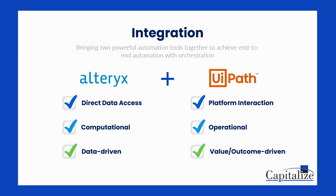Using UiPath and Alteryx together is kind of like having a skilled team of linemen and engineers working together to restore power after a major storm. The linemen are experts in quickly identifying and fixing physical damage to power lines, while the engineers analyze data and use their technical knowledge to optimize the distribution network and prevent future outages. Similarly, UiPath is a powerful RPA tool that excels at automating repetitive manual tasks like data entry, processing invoices, and intelligent document processing.